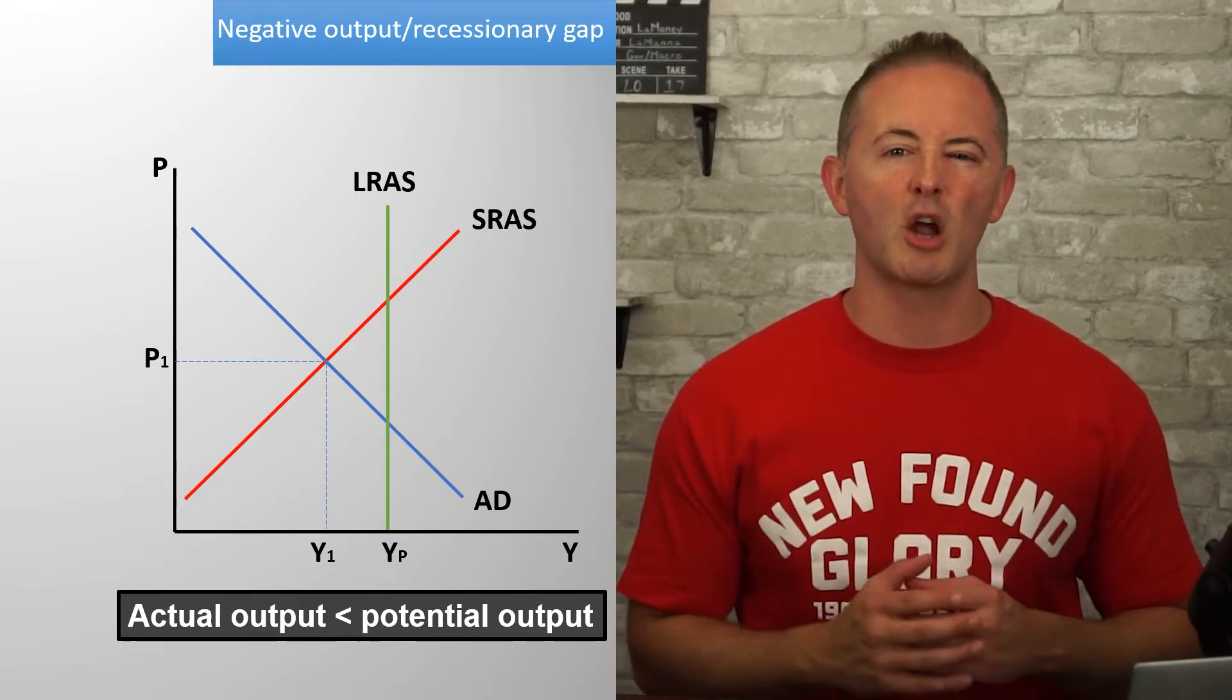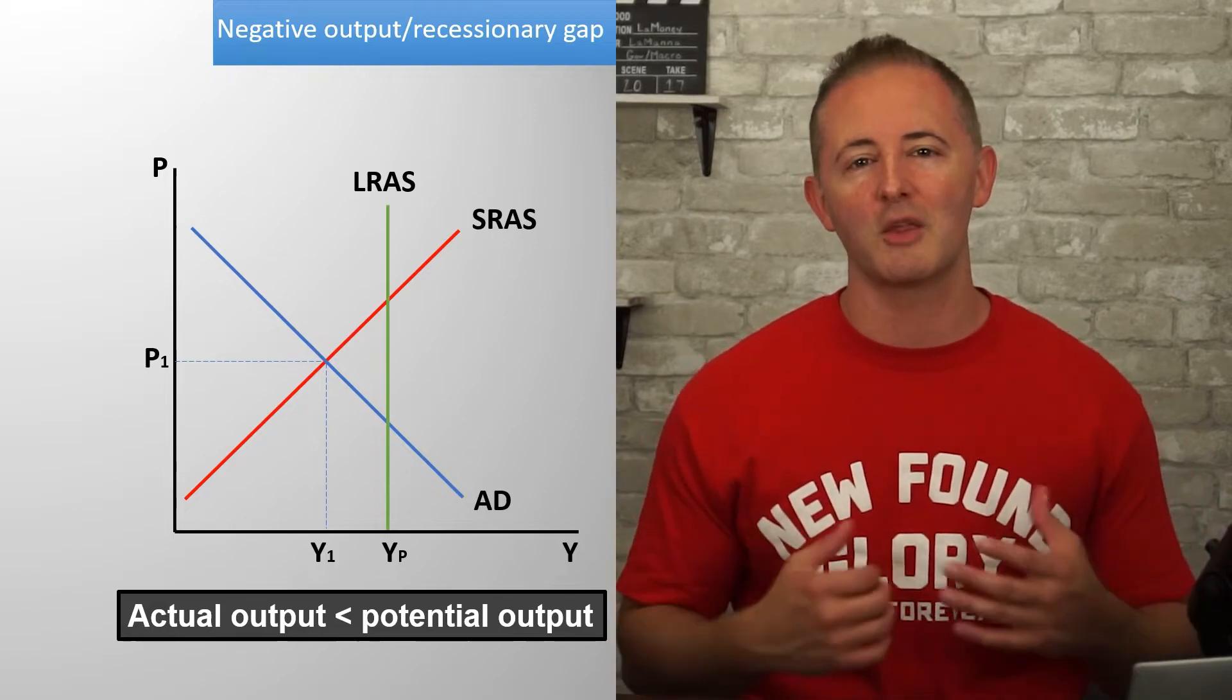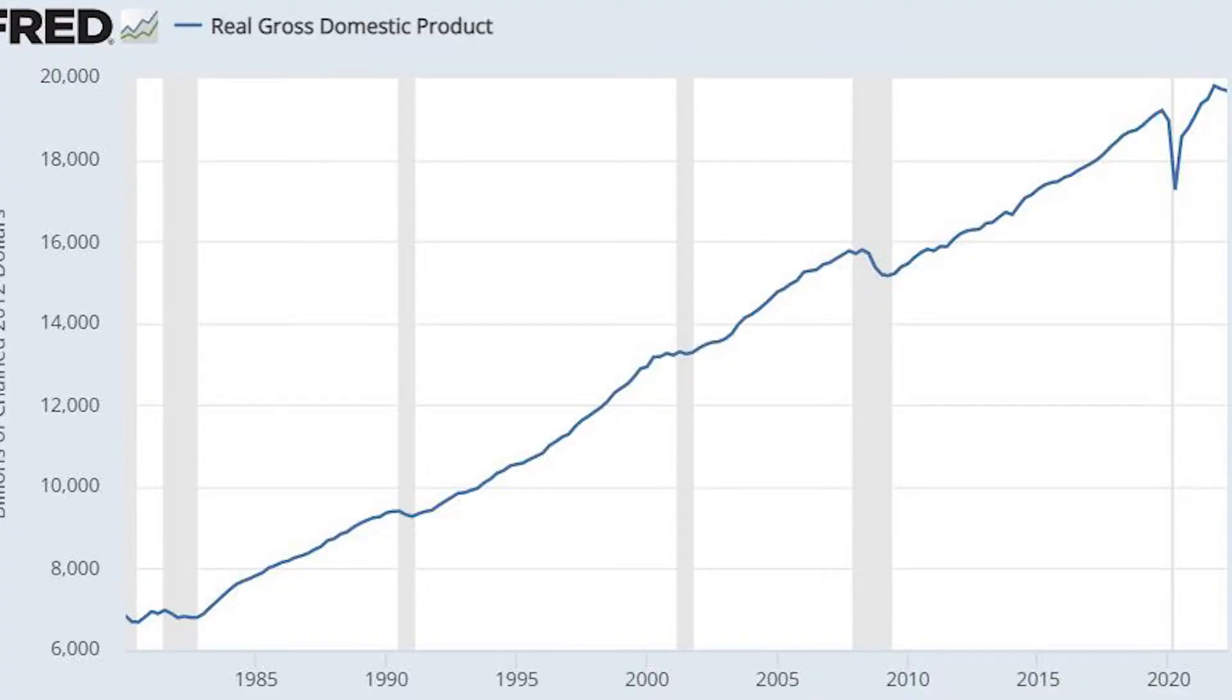So if you remember from unit 2, we talked about business cycles. That's what we're talking about here. So take a look on the screen now and we can see GDP over the last few decades. And if you notice those gray bars, they represent periods of recession. And you can see that GDP is falling during those points, can't you? And then you see those points between the grays where there's no bar. And you see that typically GDP is rising. Those are expansions. So this represents the same information that we're modeling with our ADAS model.